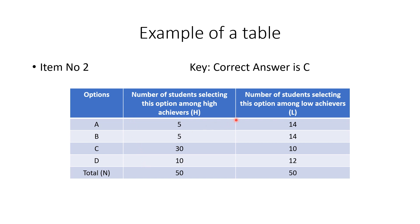Similarly, we calculate the number of students who select each option among the low achievers, denoted by L. Here, 14 students among the low achievers selected option A, 14 selected B, 10 selected C, and 12 selected D. In this example we have taken 50 high achievers and 50 low achievers, so the total number of students used for item analysis (N) is 100. H, L, and N are the key terminologies for item analysis.